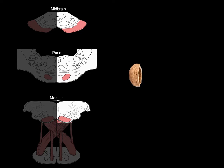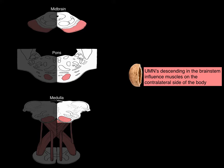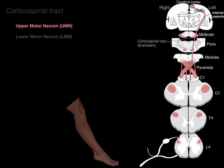In a nutshell: upper motor neurons descending in the brainstem influence muscles on the contralateral side of the body. In the pyramids we see this upper motor neuron course and decussate to the contralateral spinal cord, then descend in the lateral corticospinal tract, and then the upper motor neuron descends down each segmental spinal cord level to synapse at the lower motor neuron in the ventral horn at some segmental level.